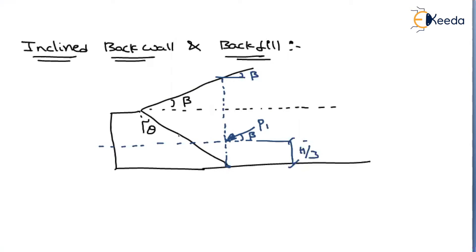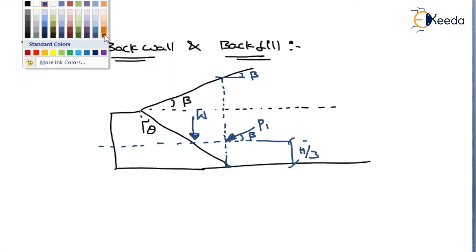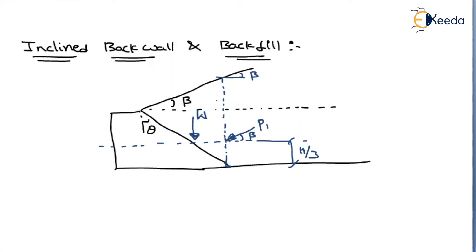Because of this inclined back wall, we will have some self-weight W acting truly along the vertical direction. The final earth pressure acting on the wall may act at some direction, and the angle for this pressure is alpha. Let us say the magnitude is P. So here we have to find what is W, what is P1, and also what is P — P being the final earth pressure acting on the inclined wall.